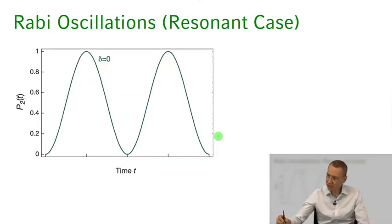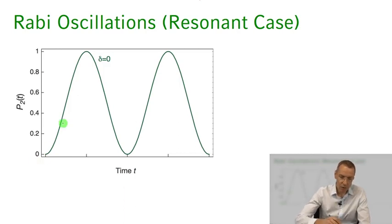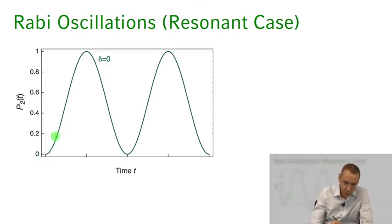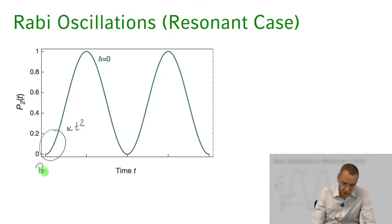Let's take a look at this. Here I've plotted the time evolution of being in the excited state after the system was initialized in the ground state as a function of time. Rather than getting more and more atoms in the excited state, we start out with nothing in the excited state, then this grows — initially quadratically, like t squared. That's exactly the result we got from perturbation theory.